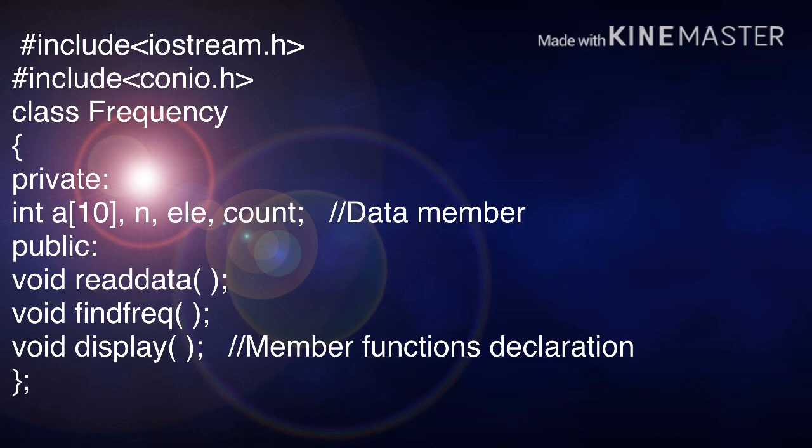Under public section, you are declaring member functions. So void readdata, void findfrequency, void display. These three member functions are declared inside the class. Closing flower braces and a semicolon represent end of the class. This is your first part of the program.